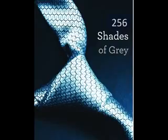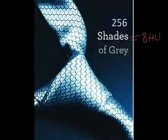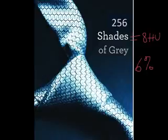A typical computer display monitor can show 256 shades of grey, which would be about 8 Hounsfield units per shade of grey. But here's the kicker — our eye can only see a 6% change in greyscale. We're just not as sensitive. We can't see all 256 shades of grey. In fact, we can only see the difference between about 17 adjacent shades of grey.